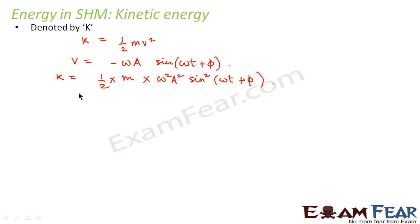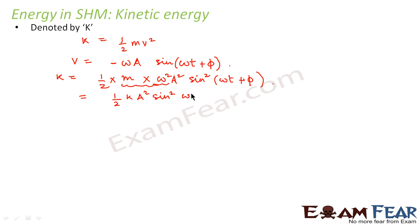Now, while we were discussing force, I told you that m omega squared is defined as k, that is the force constant. So we can write kinetic energy as half k a squared sine squared(omega t + phi). This becomes the expression for kinetic energy of a particle executing simple harmonic motion.